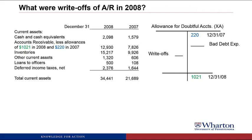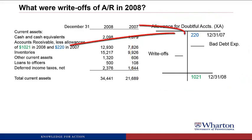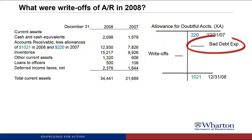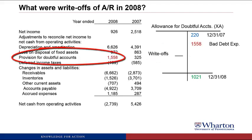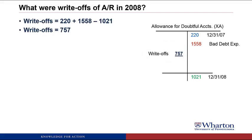The first question we're going to answer is: what were write-offs of accounts receivable during 2008? Over here on the right I have the allowance for doubtful accounts T-account, and we're going to fill in what we know — the beginning and ending balances, which are on the credit side since it's a contra asset. Back on the statement of cash flows there was a line item for provision for doubtful accounts of 1,558. Bad debt expense goes into net income but it's a non-cash expense, so it gets added back on the statement of cash flows. We plug that into the T-account and the only thing missing is write-offs. So: 220 beginning balance plus 1,558 bad debt expense, minus the ending balance of 1,021, gives us write-offs of 757.